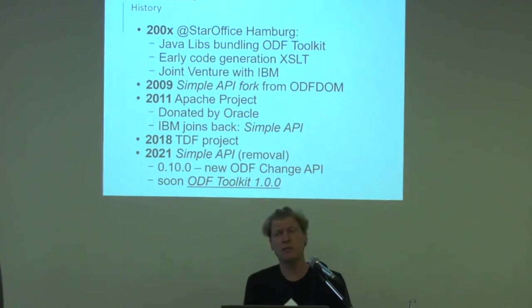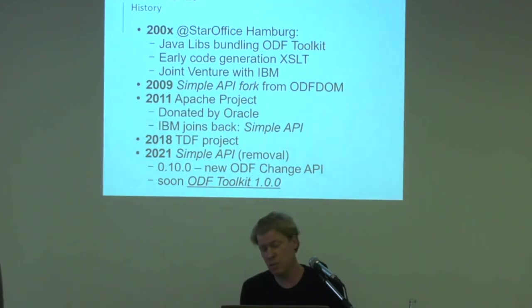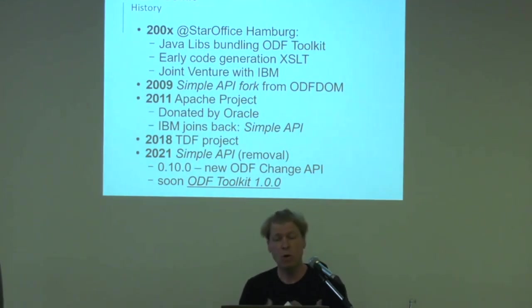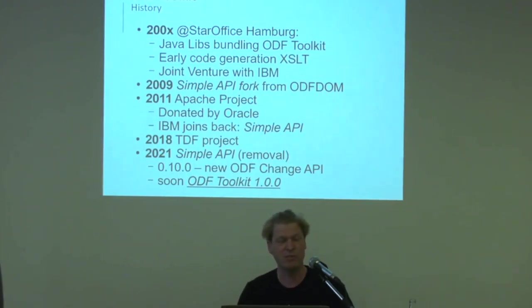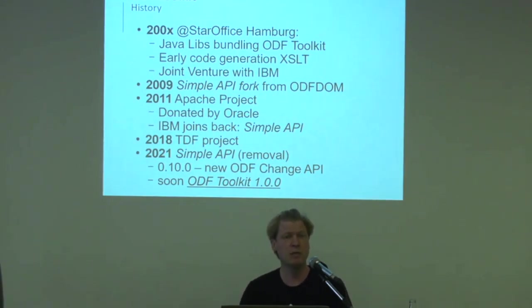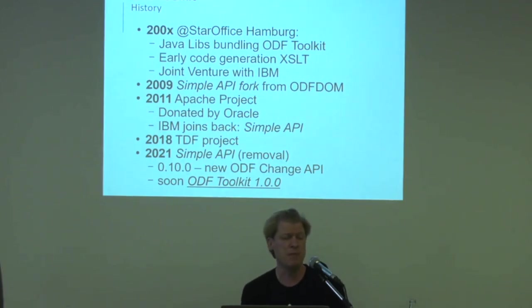From history, we started very early in the early 2000s in StarOffice, where some of us came from. StarOffice is the ancestor of OpenOffice and LibreOffice. We came together thinking it might be nice to have some Java libraries on the server — we were Sun, the inventors of Java — just to have a low memory footprint or some server-side tooling. Then we had a joint with IBM, and they did a fork on Simple API that was rejoined, but unfortunately it was not merged again.